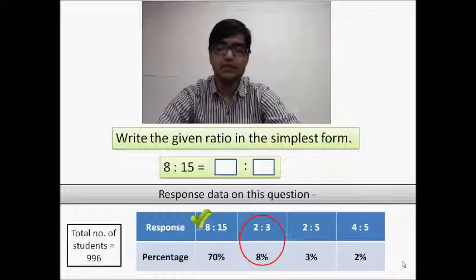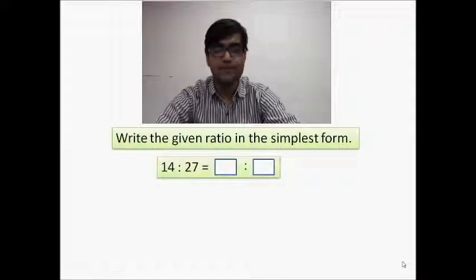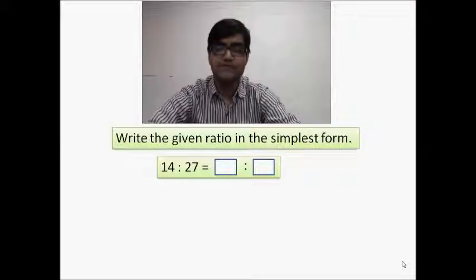Let us see another example to consolidate our observation. In this example we are asked to once again fill in the blank and write the given ratio in the simplest form. The ratio given is 14:27.